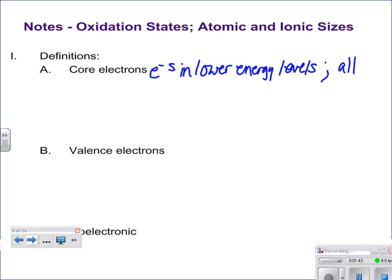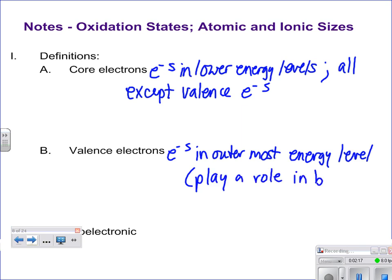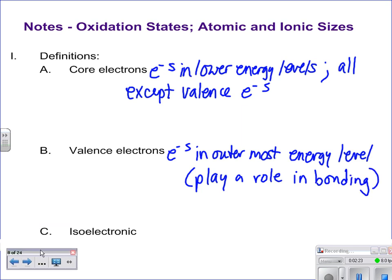Core electrons are all electrons except valence electrons. Valence electrons are the electrons in the outermost energy level. If they're out there at the ends of that atom, they're going to be the ones playing a role in bonding because they can easily be knocked off or they can easily attract others to them. That's going to be where others are attracted to as they enter those valence shells.